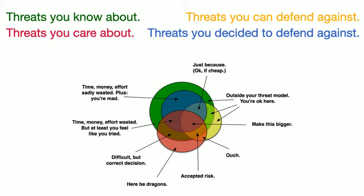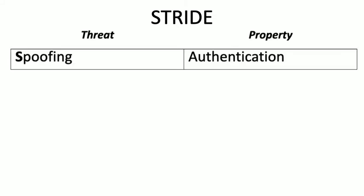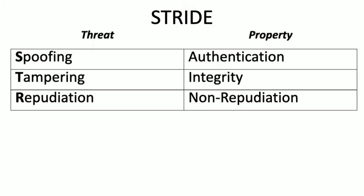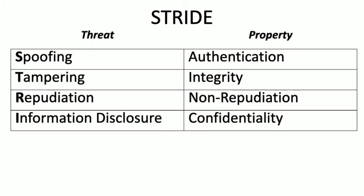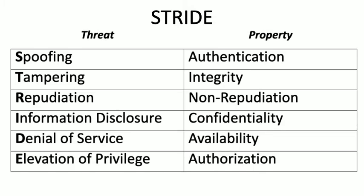But all this is still very abstract, so let's take a look at a more formal model that can help you identify the different threats. One of these models is STRIDE, which maps specific threats by category to a given system property. Spoofing, for example, is the threat against the authenticity property. Tampering against integrity. Repudiation against non-repudiation. Information disclosure against confidentiality. Denial of service against availability. And elevation of privilege against authorization. For each property, you can then begin to enumerate vulnerabilities.